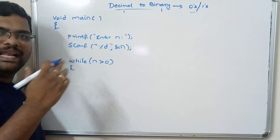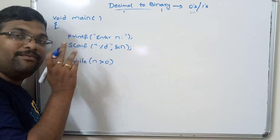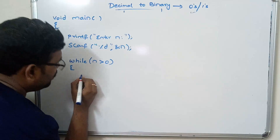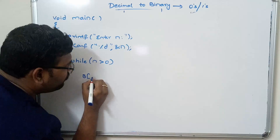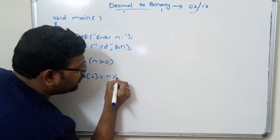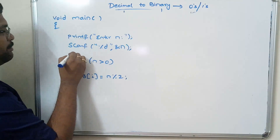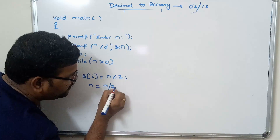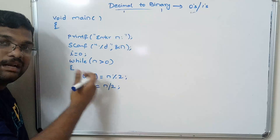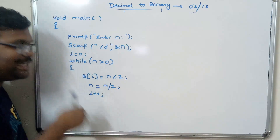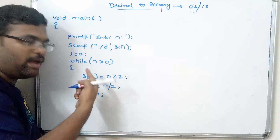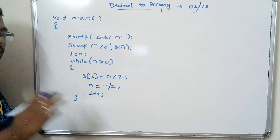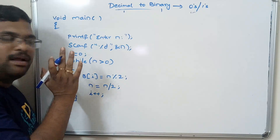While n is greater than 0, this loop will be executed, and only when n is not greater than 0 will the loop terminate. Inside the loop: b[i] = n mod 2 — with i initially 0. Then we update n: n = n / 2, and increment i with i++, so the next remainder goes to the next index.